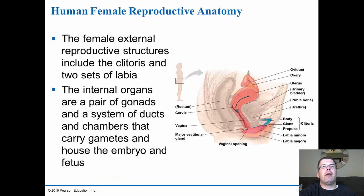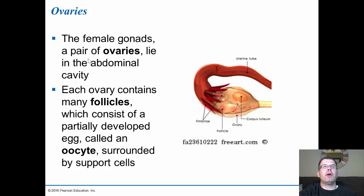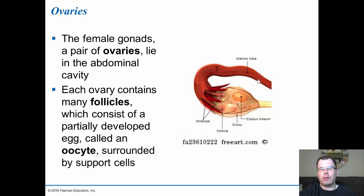The external female structures include the clitoris and two sets of labia, which are skin folds on the outside. Internal organs include a pair of gonads — the ovaries — a system of ducts and chambers that carry gametes and house the embryo, the uterus, and the vagina for reception of the penis. The female gonads, the ovaries, lie in the abdominal cavity. Follicles containing partially developed eggs called oocytes develop there, and each month one follicle ruptures and releases an egg.